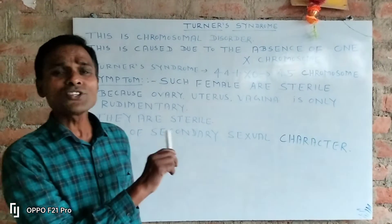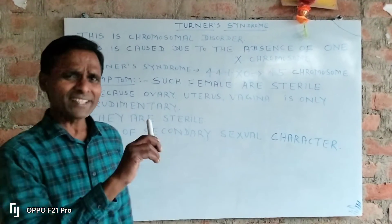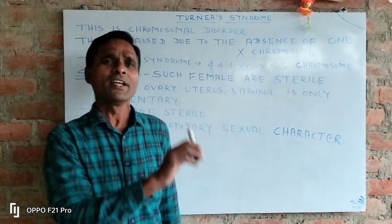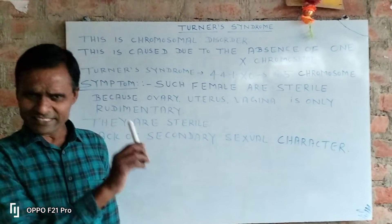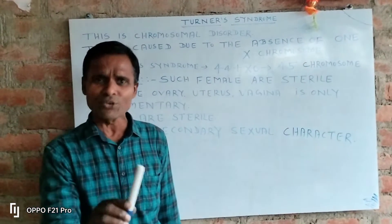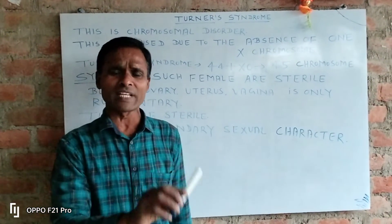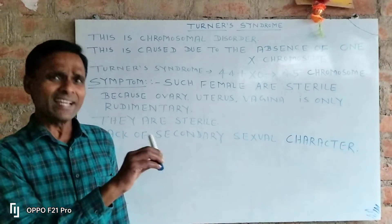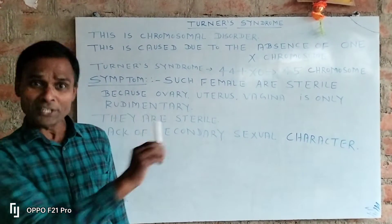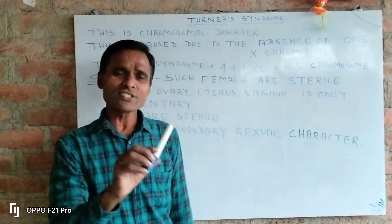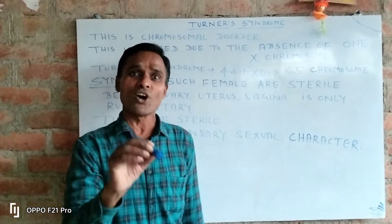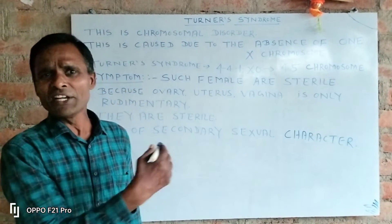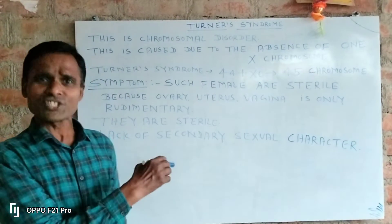Turner Syndrome is caused due to the absence of one X chromosome. There is rudimentary development of the ovary, uterus, and vagina. So individuals with Turner Syndrome are neither male nor female.